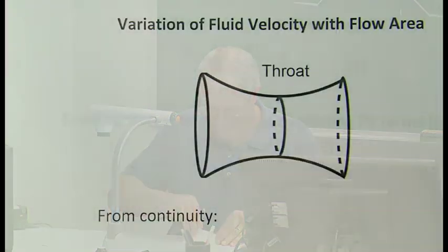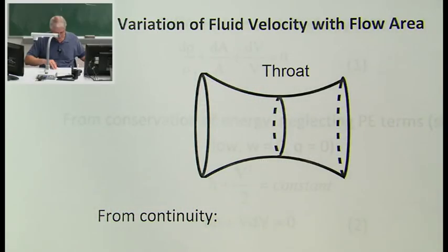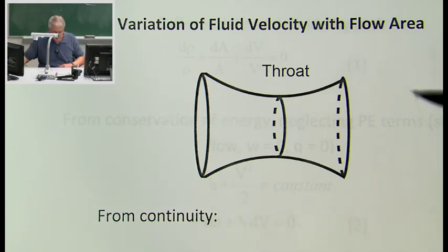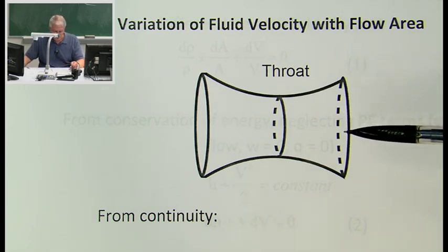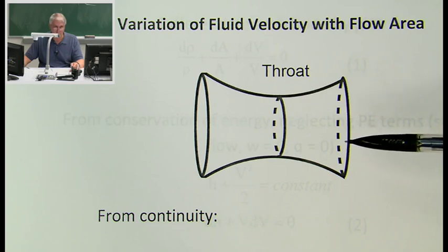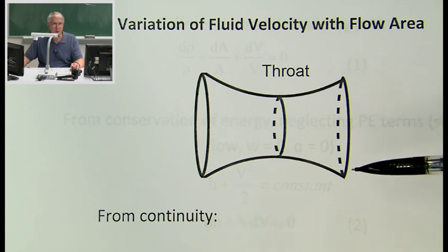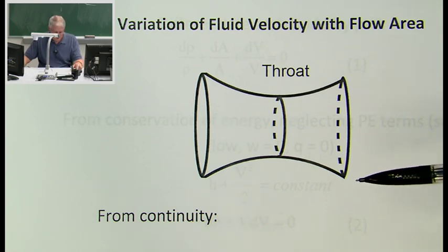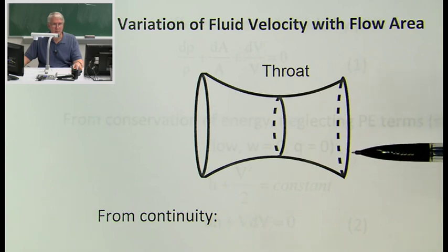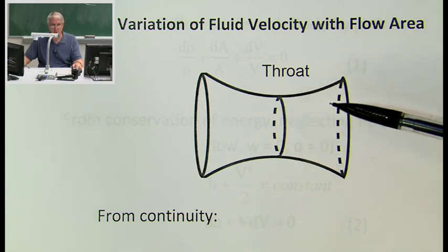What we want to look at is the variation of fluid velocity with flow area. This duct is an example of what we call a converging-diverging nozzle, and that's how we accelerate gases to supersonic speeds. The first use of such a nozzle was made by Swiss engineer Carl Laval in 1893, and such nozzles are frequently referred to as Laval nozzles.